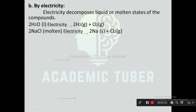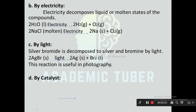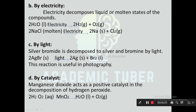By electricity: Electricity decomposes liquid or molten states of compounds. 2H₂O (electricity) → 2H₂ + O₂; 2NaCl (electricity) → 2Na + Cl₂. By light: Silver bromide is decomposed to silver and bromine by light: 2AgBr (light) → 2Ag + Br₂. This reaction is useful in photography. By catalyst: Manganese dioxide acts as a positive catalyst in the decomposition of hydrogen peroxide: 2H₂O₂ (MnO₂) → 2H₂O + O₂.